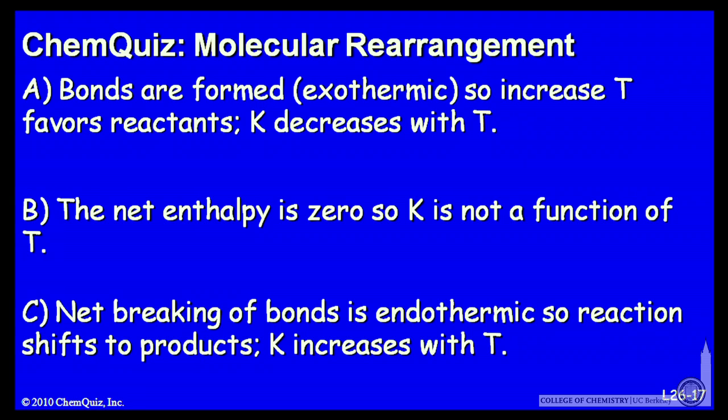Or C: net breaking of bonds is endothermic, so the reaction shifts to products, which is an increase in K. Think about those explanations for a minute and make a selection.